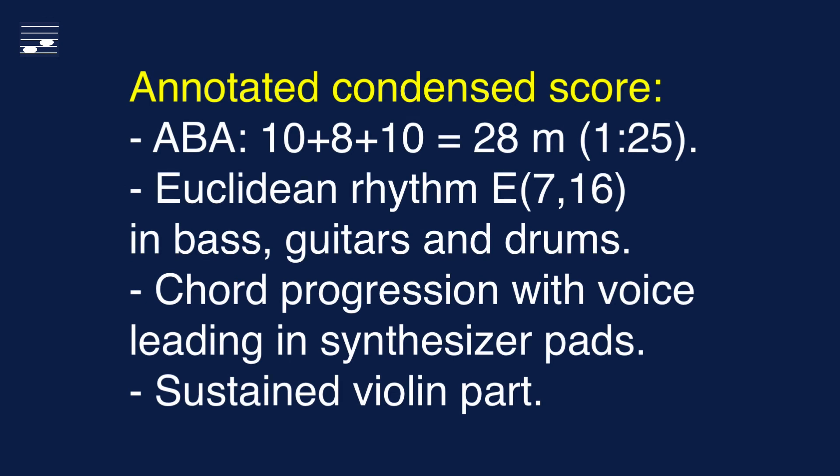And now the complete example in a condensed score. This piece of music is 28 measures long, with ternary ABA form. You will hear the syncopated Euclidean rhythm in the bass guitar, the plucked acoustic and strummed electric guitar, and in the drums — in particular in the snare, toms and hi-hat. The chord progression voice leading, as discussed before, returns in synthesizer pads. Finally, there are additional musical elements for electric piano, marimba, and the sustained note high violin part.